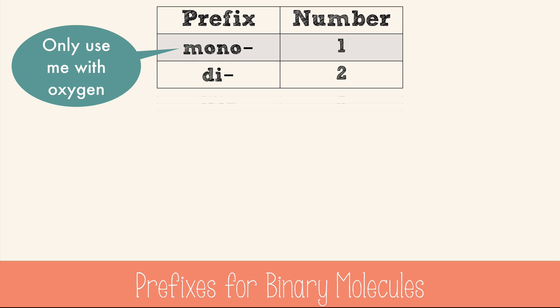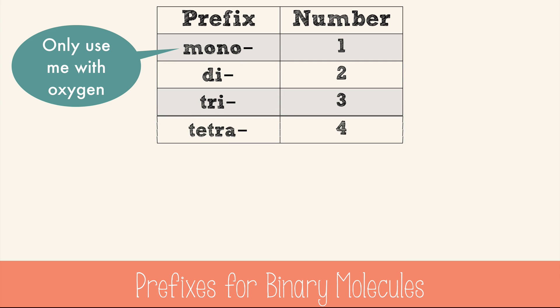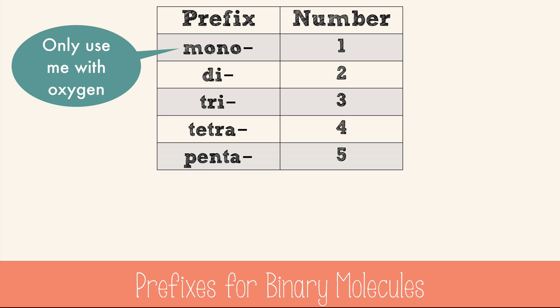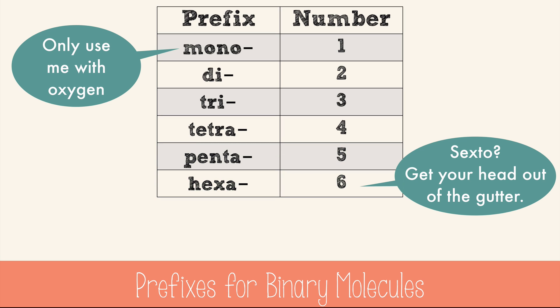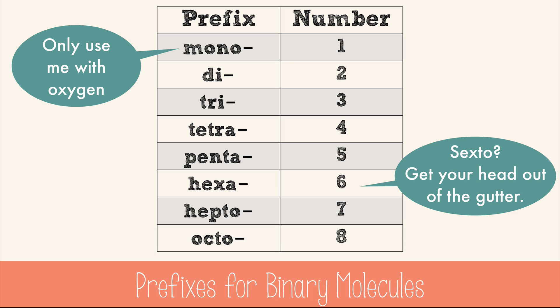Di is two, tri is three, tetra is four, penta is five. And for six, we say hexa — not sexto. Just remember, there's no sex in chemistry. You learn about that in biology. Hepto is seven and octo is eight. The numbers go farther than this, but you can look them up.